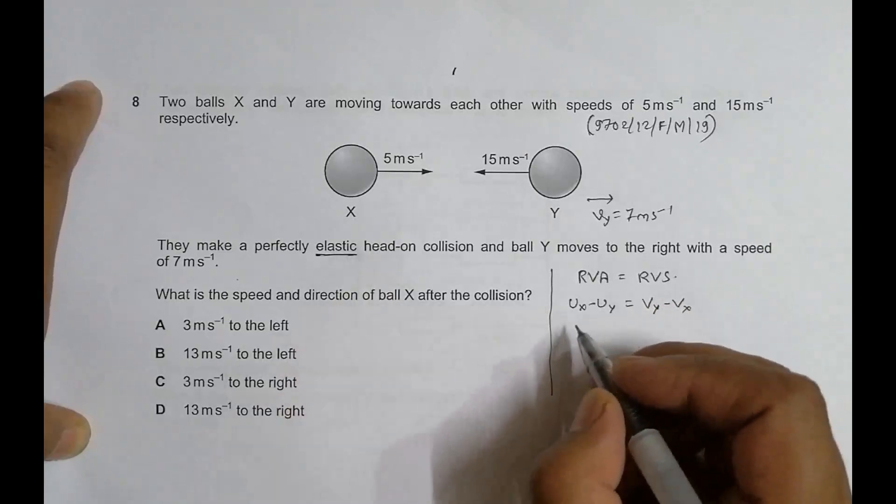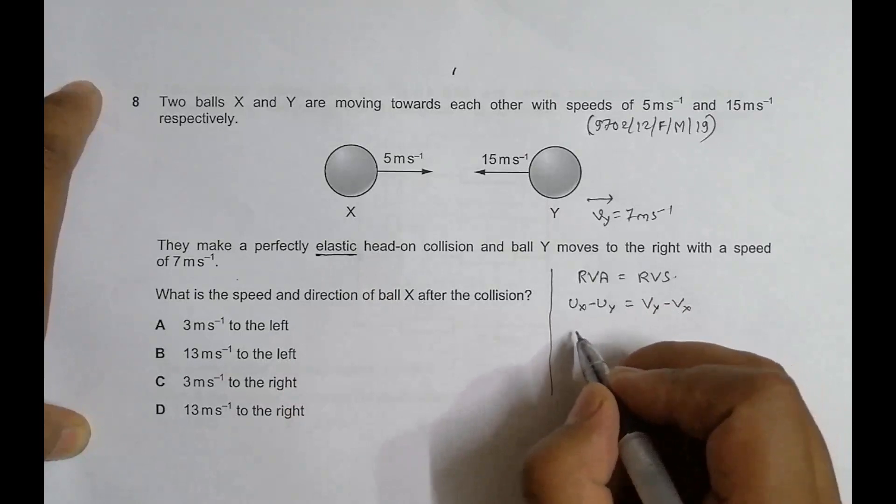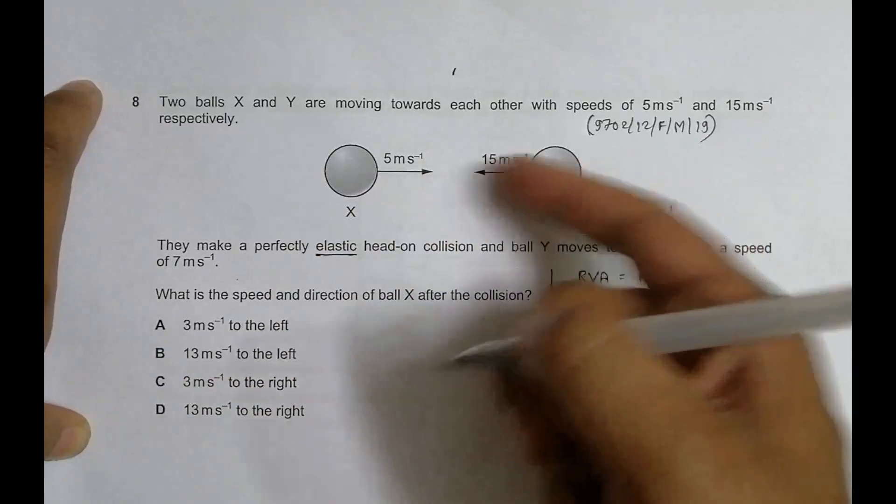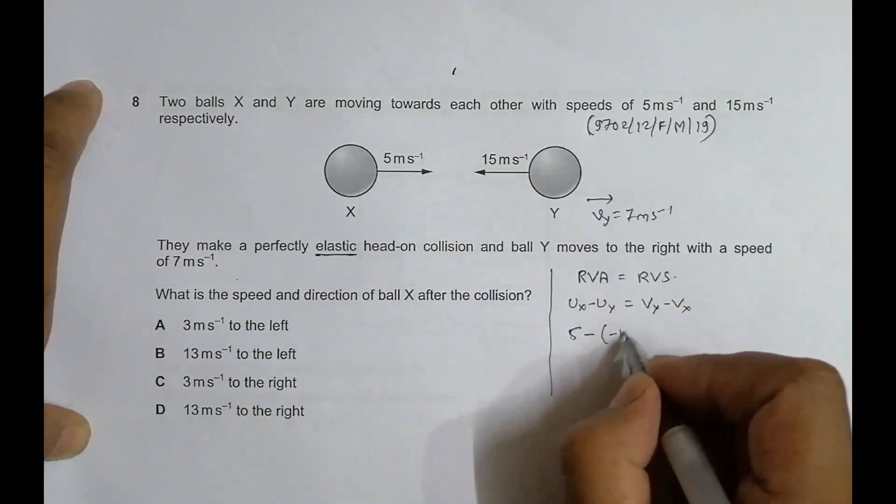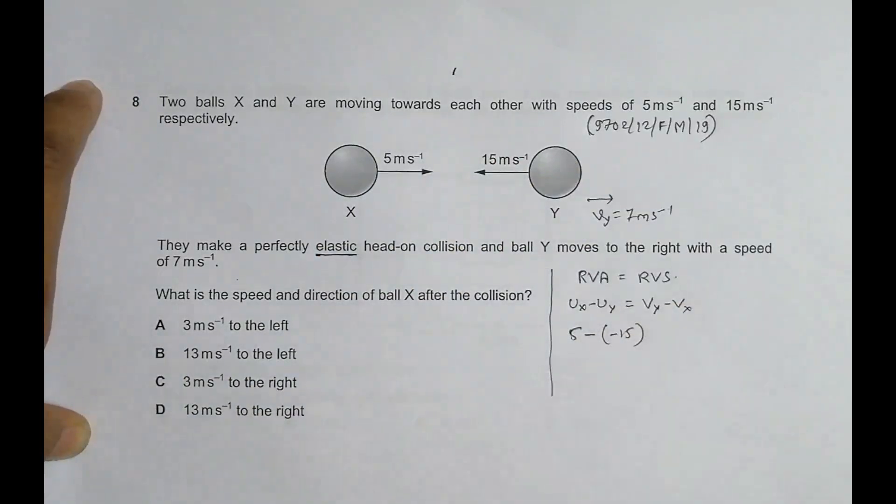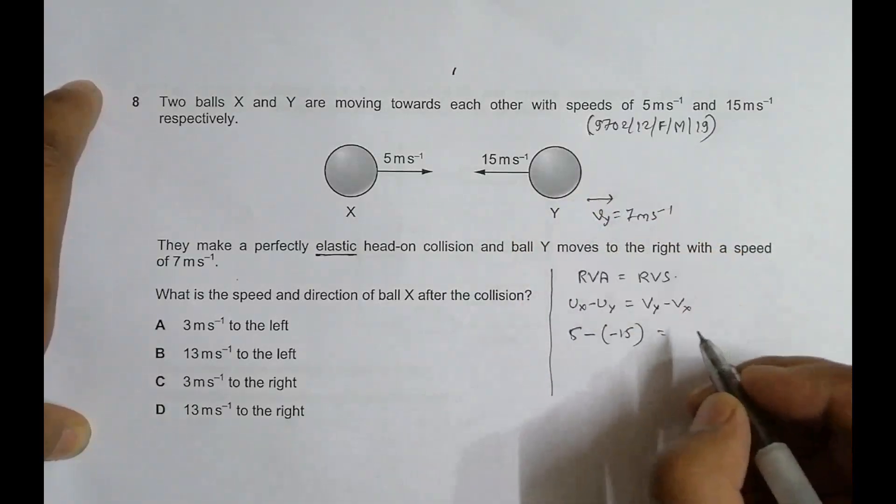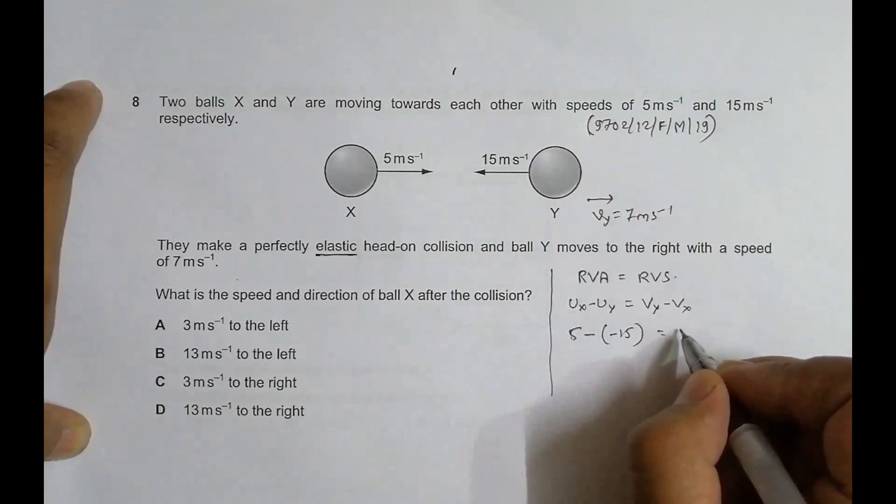So u_x equals 5 meters per second going to the right. This one is going to the left, so it should be minus 15, because during theory we assume that going to the right is positive and going to the left is negative. v_y is given as 7.